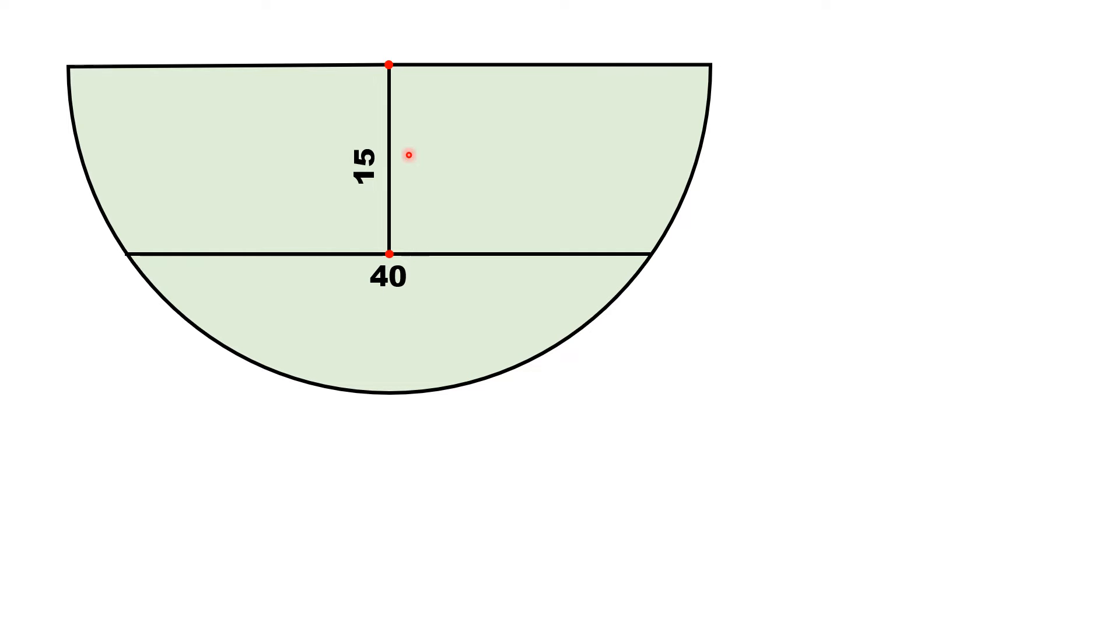Since we have a circle theorem that if we draw a line segment from the center and is perpendicular to the chord, then it must divide the chord into two equal parts. Thus, this length and this length are 20 units each.